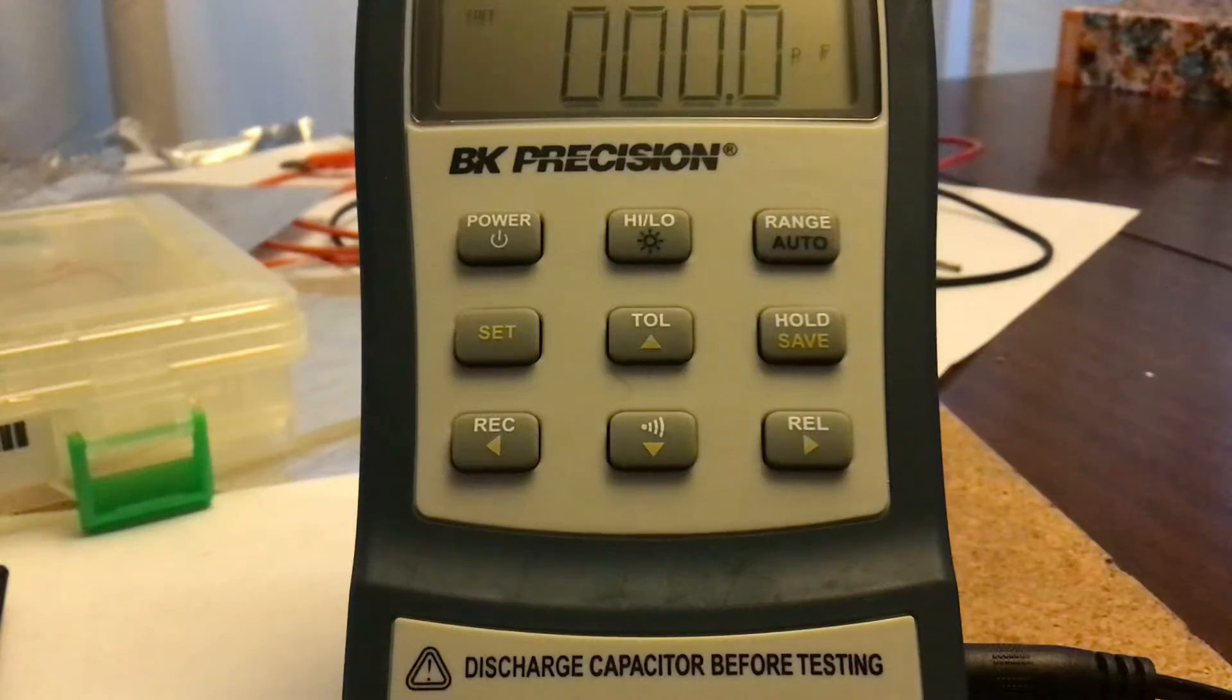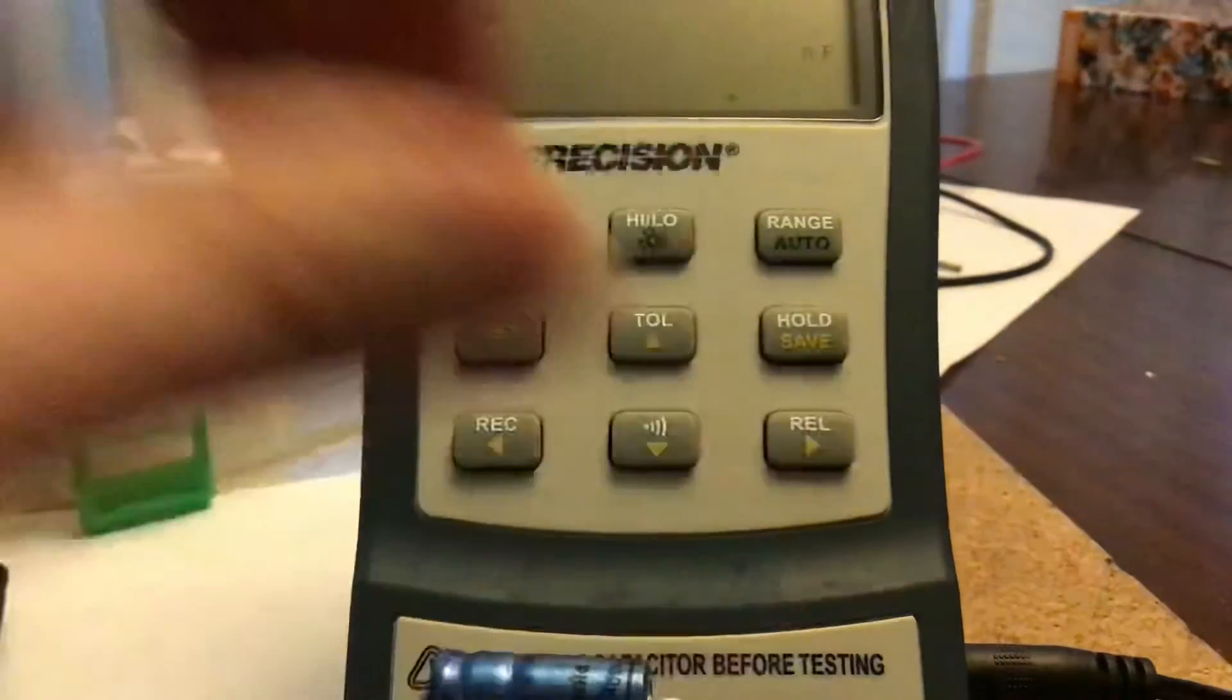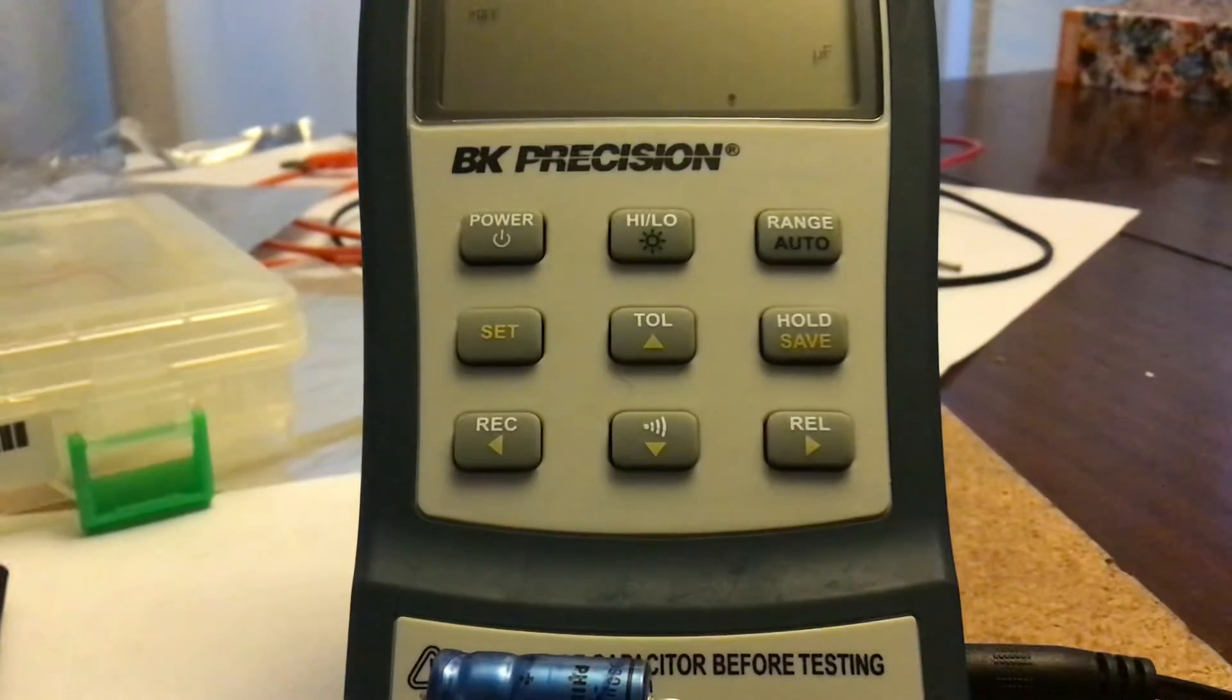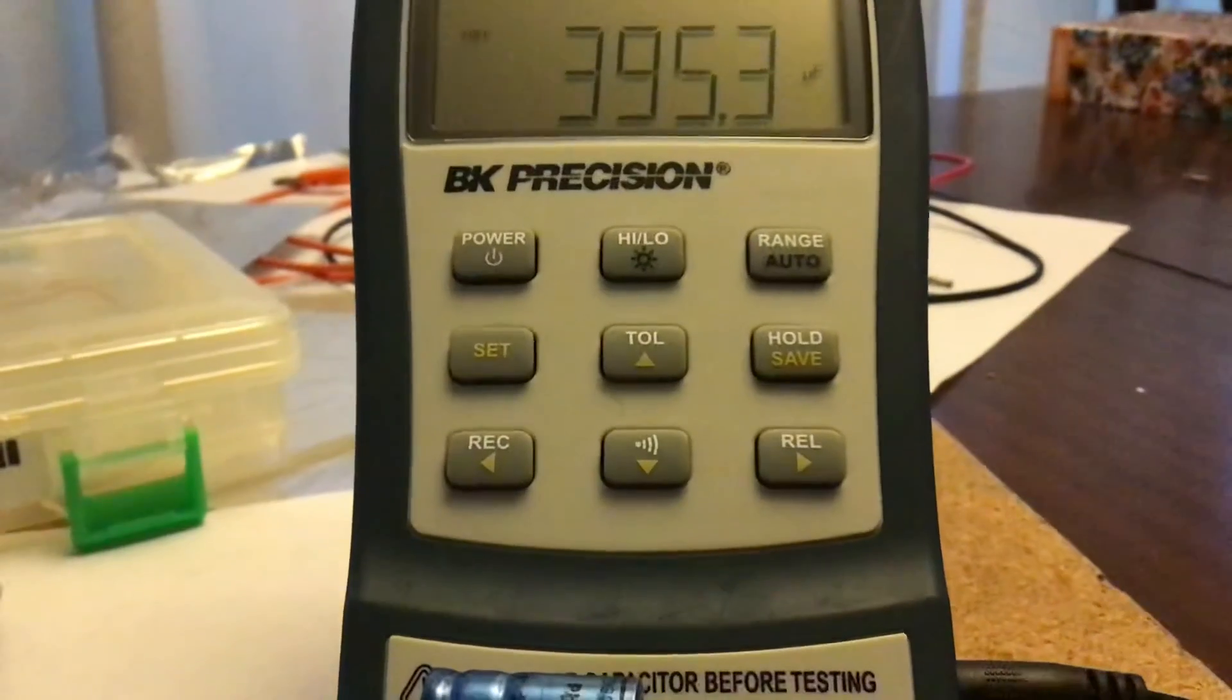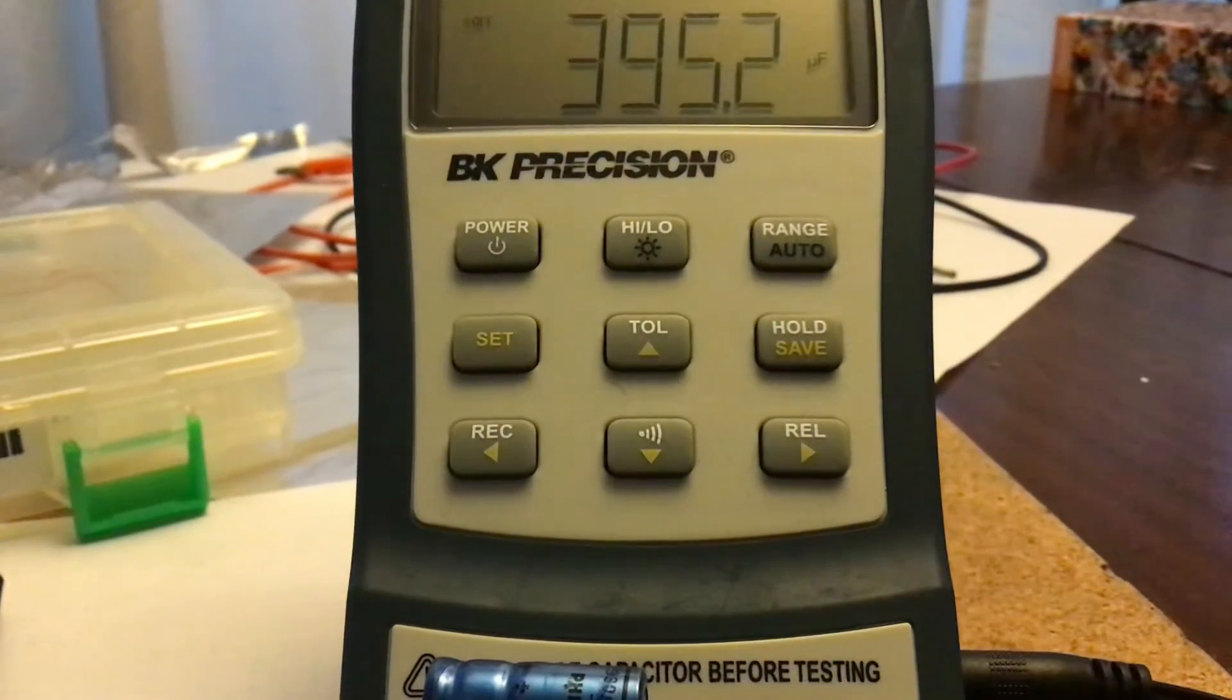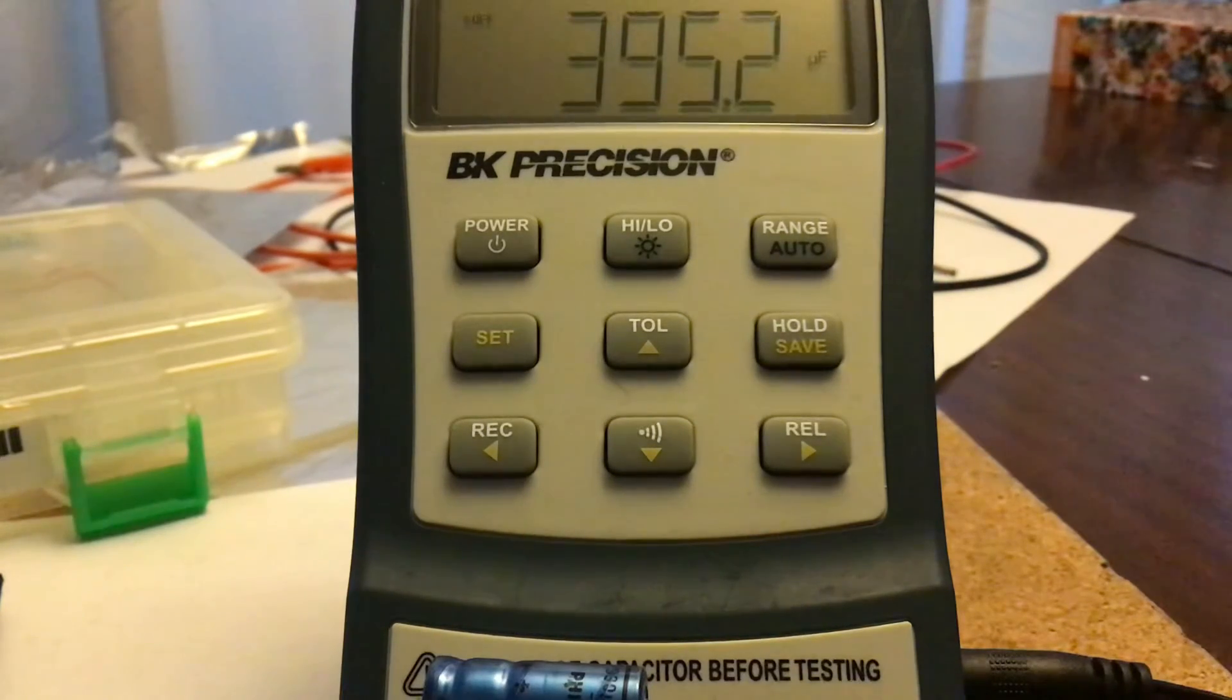So again, let's put this in and measure the 330. Oh, I've got it on auto range. The problem is when I didn't realize I had auto range, it takes a little while. Well, it's not so bad. It actually settled down pretty quickly.